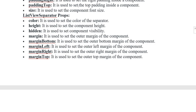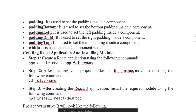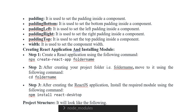ListView Separator props: Color — used to set the color of the separator. Height — used to set the component height. Hidden — used to set component visibility. Margin — outer margin including bottom, left, right, and top. Padding — including top, left, right, and bottom.